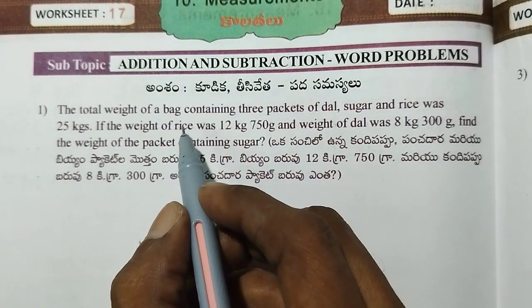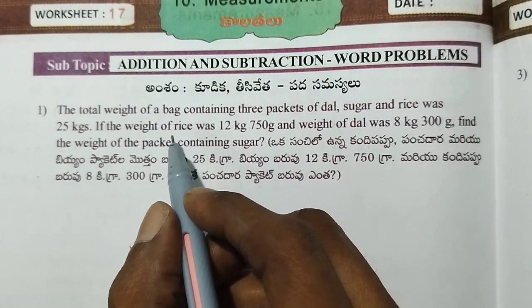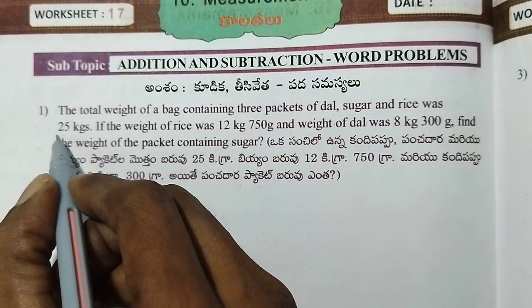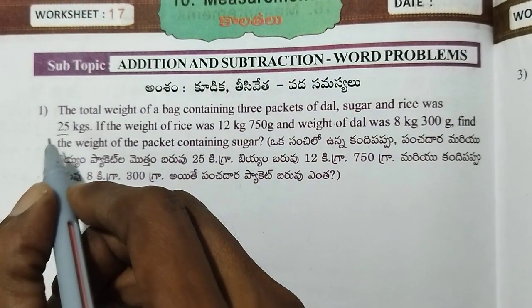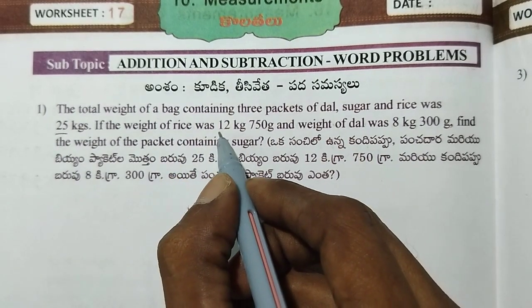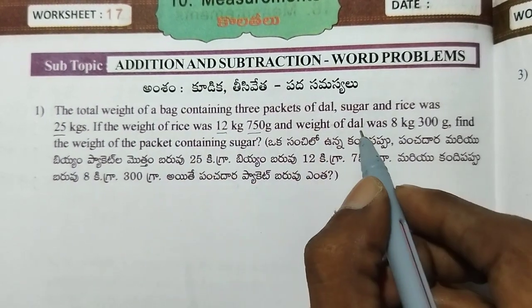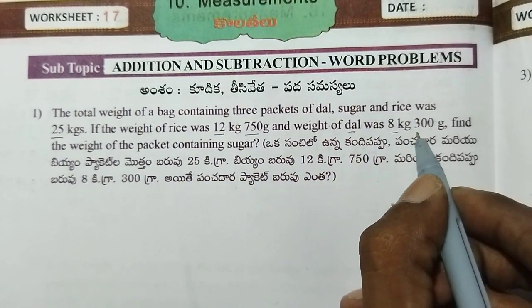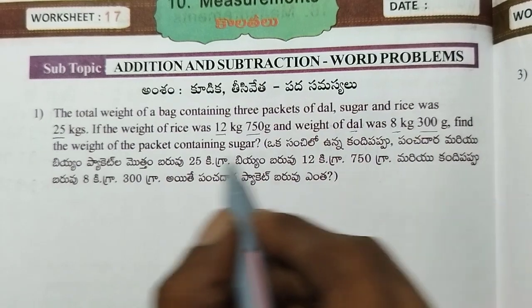The total weight of the 3 packets was 25 kg. Rice was 12 kg, and dal was 8 kg 300 grams.